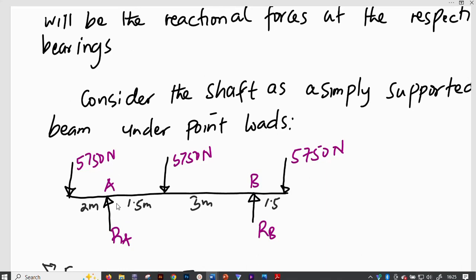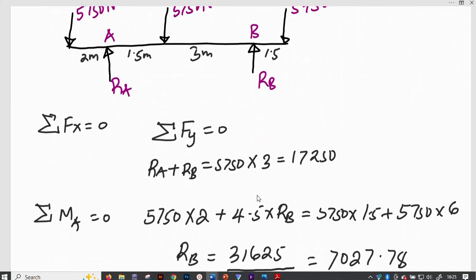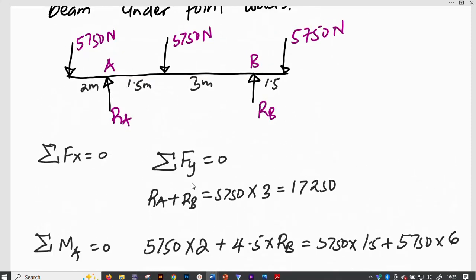Therefore, we will have RA here and RB there. So, meaning that we can use equilibrium conditions to calculate for any unknown reactions here. So, sum of forces in the X direction is equal to zero. Since we do not have any forces in the horizontal direction, then this will still be zero.